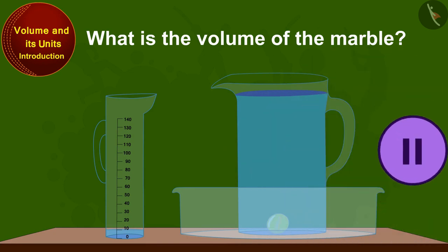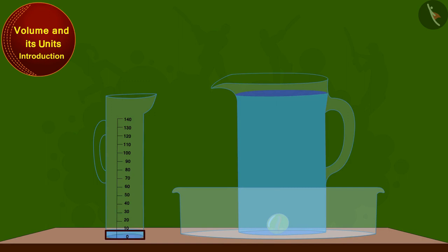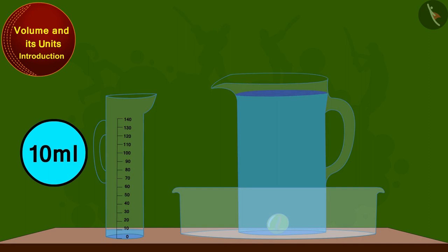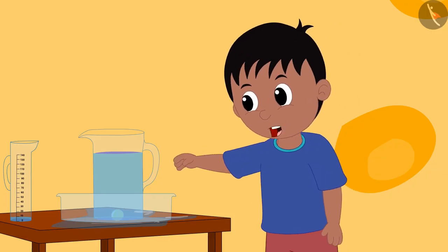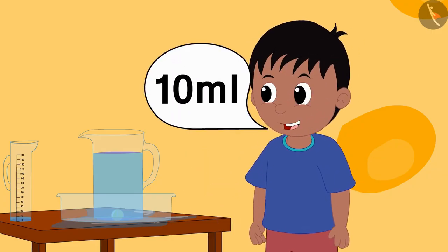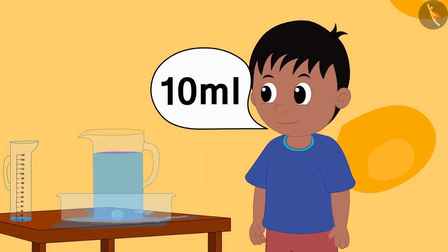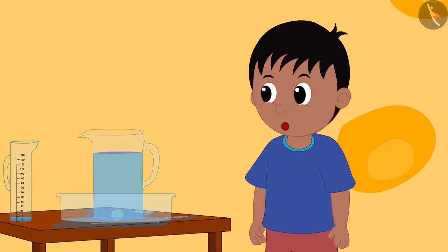Bablu asked, if this much water is in the measuring cup, can you tell what the volume of the marble is? If you want, you can stop the video and find the answer. The surface of the water in the measuring cup is at the 10 milliliter mark, so the volume of the marble is 10 milliliters. Raju exclaimed, wow, the volume of this marble is 10 milliliters!